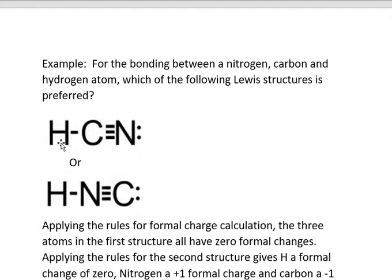Hydrogen has just two bonding electrons, so we assign one to hydrogen — it has one valence electron, so formal charge is zero. Carbon has four valence electrons and half of eight bonding electrons is four, so carbon is zero. Nitrogen has five valence electrons; we assign half of the six bonding electrons (three) plus all two non-bonding electrons, giving five total assigned — so formal charge is zero. All atoms are zero.